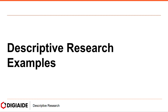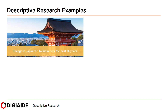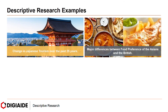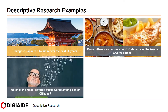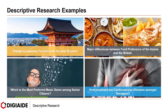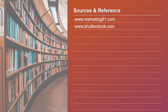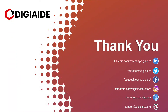Let's look at some examples of descriptive research. For instance: change in Japanese tourism over the past 25 years; major differences between food preference of Asians and the British; which is the most preferred music genre among senior citizens; or how prominent are cardiovascular diseases amongst teenagers. That's it folks — this brings an end to the topic on descriptive research. Thank you and see you in the next video.